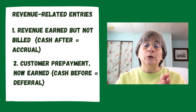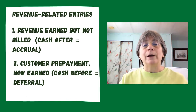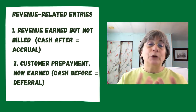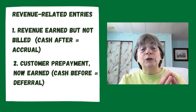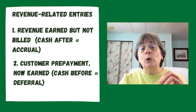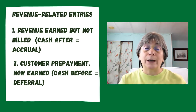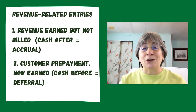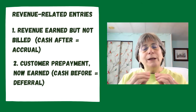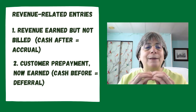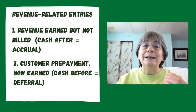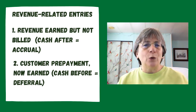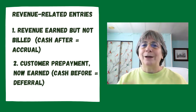If it's a deferral — meaning the cash came before — for example, we received a customer deposit. The cash came before, so we can't claim that revenue yet because we haven't earned it. That means we're going to debit a liability account and credit a revenue account. If it is an accrual for a revenue account — cash came after — then we're looking at debiting accounts receivable and crediting revenue. That's a typical transaction: debit accounts receivable, credit revenue. That's an accrual.